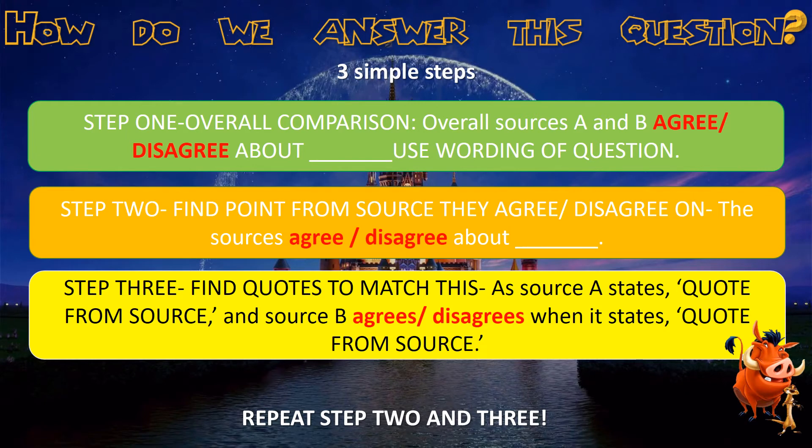There are three simple steps to answering this question. Step 1 is your overall comparison, which earns a mark. You say: 'Overall, sources A and B agree or disagree about...' and then use the wording of the question. That gets you a mark.